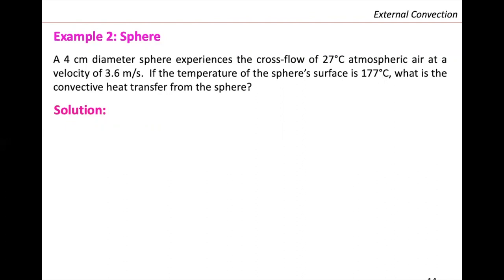The first step is to read the properties at the required temperatures. We need to read the viscosity at the wall temperature (177°C) and the rest of the properties at 27°C, which is the free stream temperature. Properties of air at the free stream temperature of 27°C, approximately 300 Kelvin: I have density, viscosity, kinematic viscosity, thermal conductivity, and the Prandtl number. We also need the dynamic viscosity of air at the surface temperature of 177°C.